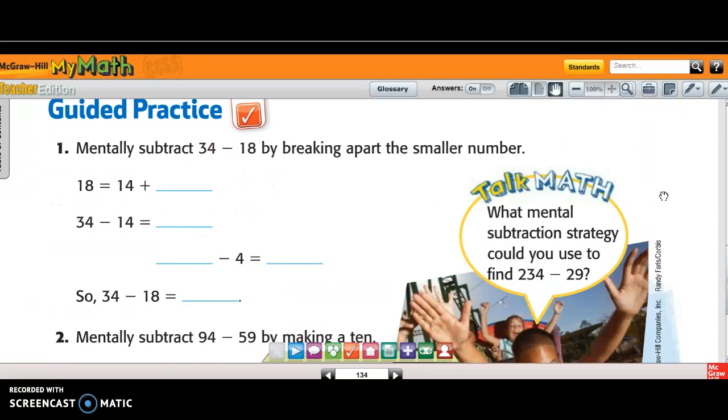The guided practice: mentally subtract 34 minus 18. Breaking apart the smaller number. And again, breaking apart is what strategy am I using? Decompose. So 18 is 14 plus what gives me 18? 4. So now I'm going to subtract 34 minus 14. And what is that? 20. 4 minus 4 is 0, 3 minus 1 is 2. So now I have 20.